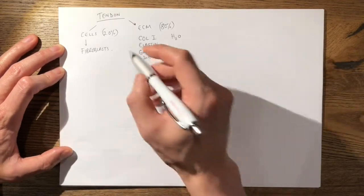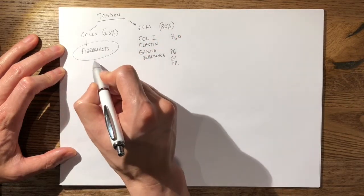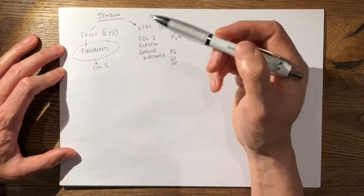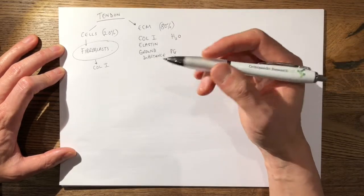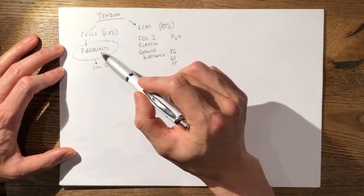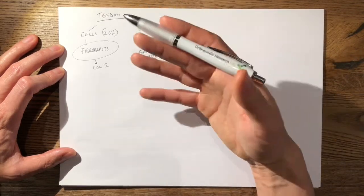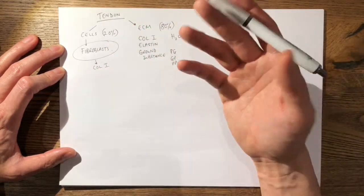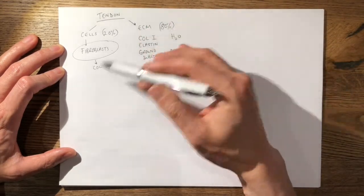Collagen type 1 is synthesized by fibroblasts. It is made intracellularly as a precursor called pro-collagen. The pro-collagen is then secreted from the fibroblast into the extracellular matrix, where it is cleaved extracellularly into collagen, which is then assembled into the tendon.